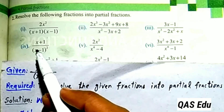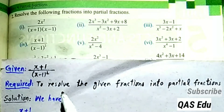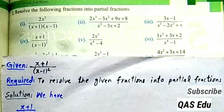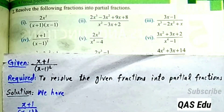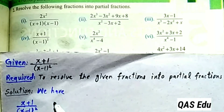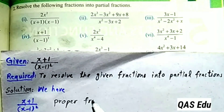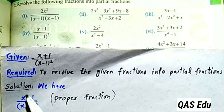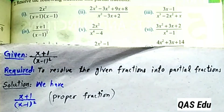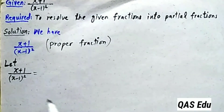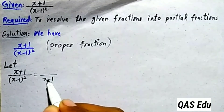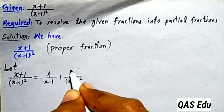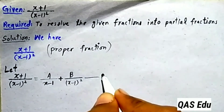Part number 4, question number 2: we are required to resolve the given fraction into partial fractions. The fraction is (x+1)/(x-1)². This is a proper fraction. We identify a linear repeated factor (x-1)², so let (x+1)/(x-1)² = A/(x-1) + B/(x-1)². This is equation number 1.